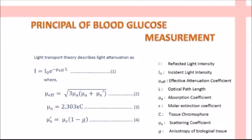Mu-a is the absorption coefficient whereas mu-s is the scattering coefficient of the cell. From the equation, we can conclude that when the absorption coefficient mu-a increases, that decreases the reflected light intensity. And when the scattering coefficient increases, that increases the reflected light intensity. This principle is used in the measurement of blood glucose.